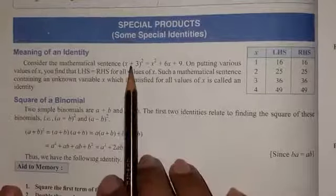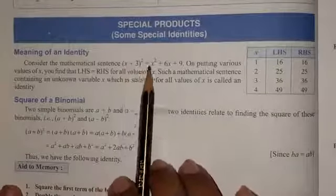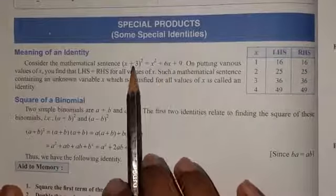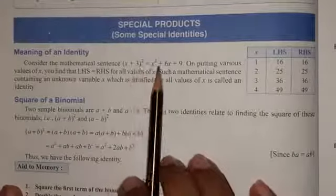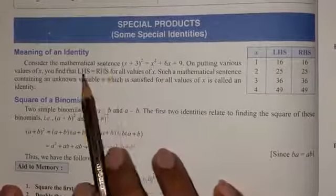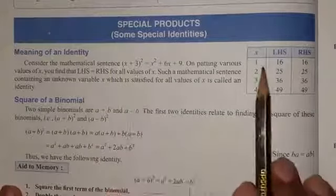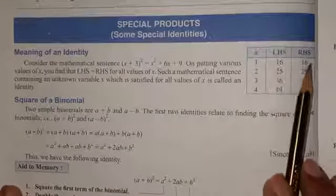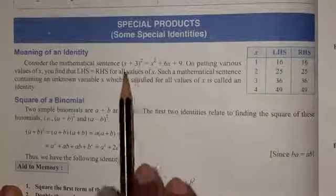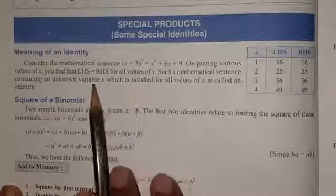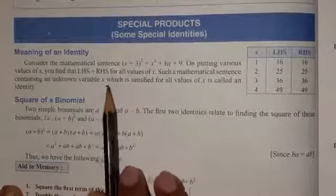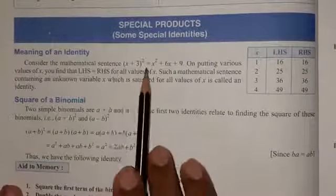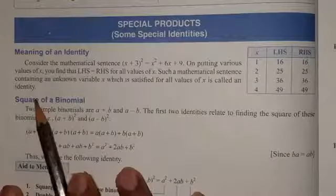इसमें बताया गया कि अगर हम एक mathematical sentence को consider करें — x plus 3 square is equal to x square plus 6x plus 9 — और इसमें हम different types की values को left-hand side में रखेंगे तो वो हमको हर बार satisfy करेगा। एक chart बना हुआ है — 1 को रखा गया left में तो भी 16 मिला, right में रखा गया तो भी 16 मिला। तो एक ऐसा sentence mathematics का जो x variable की किसी भी value को satisfy कर सकता है equation की form में, तो उसको हम identity कहते हैं।